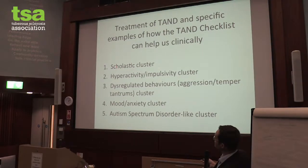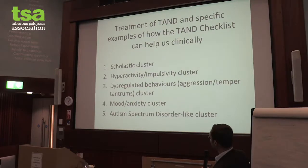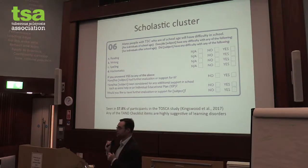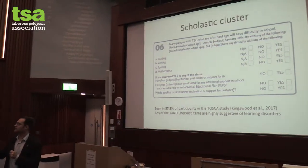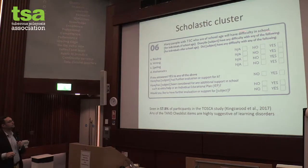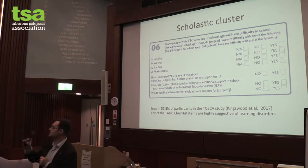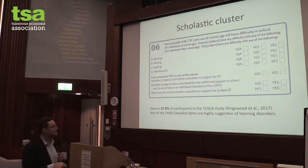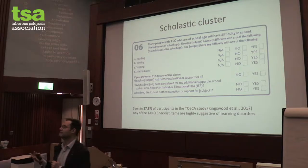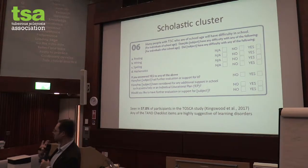We'll talk a bit about the scholastic cluster. If you had a TAN checklist in front of you, item six asks about many people with TSC who are of school age and will have difficulty in school — has your child had difficulty with reading, writing, spelling, maths? Any of these would be a marker of the need to think about what might be problematic in school. Almost 60%, two-thirds of people with TSC have had some of these difficulties, even when their intelligence might be absolutely fine.